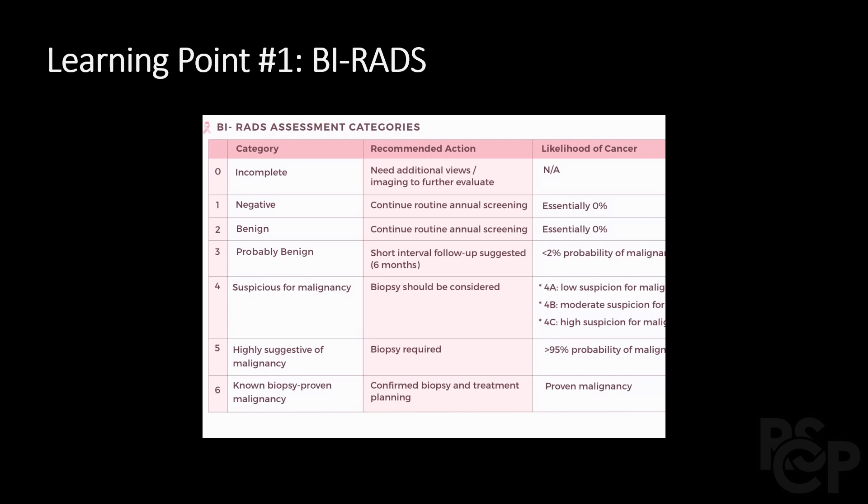Category four, which is what we saw in our case, is a lesion suspicious for malignancy. Depending on subclasses 4A, 4B, and 4C, the degree of suspicion for malignancy is further classified. In any case, we may end up recommending a biopsy.